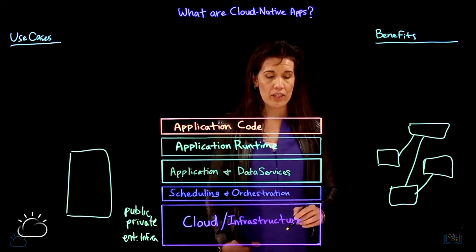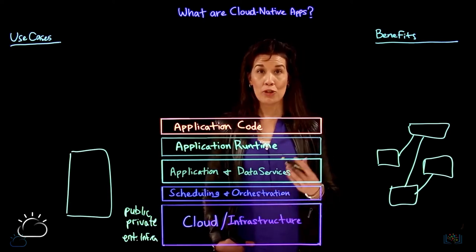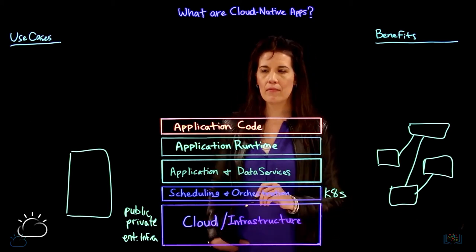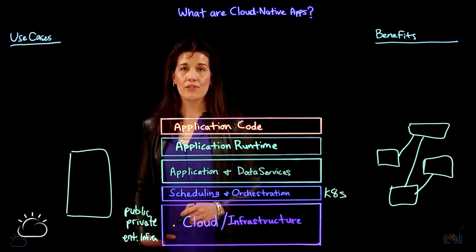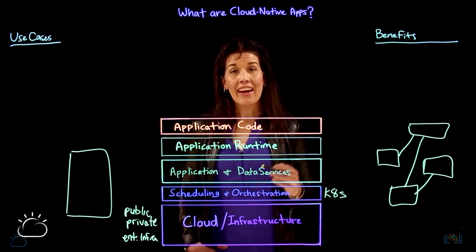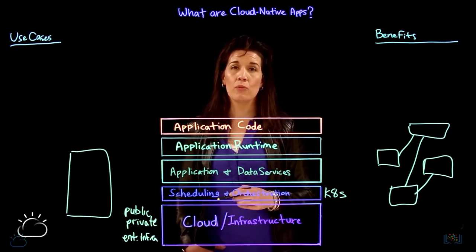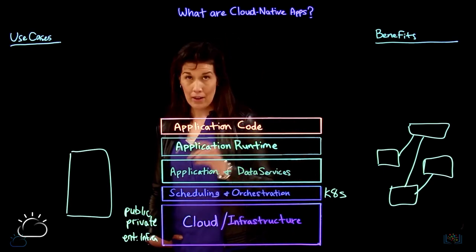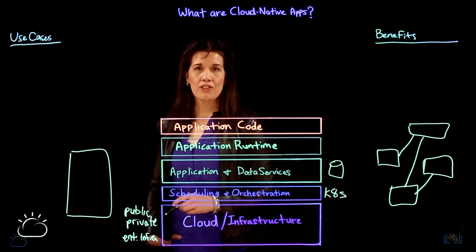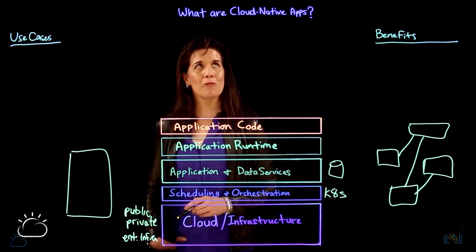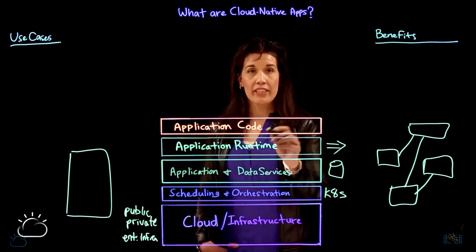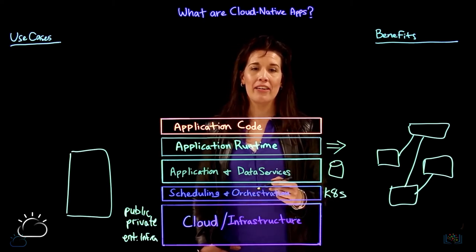We also have our scheduling and orchestration layer. This layer is all about control planes like Kubernetes. We also have our application and data services layer. This layer is all about backing services and being able to integrate our application code with existing services that may be available on other clouds or even on-premise. We have our application runtimes — these are what were traditionally or conventionally known as middleware.